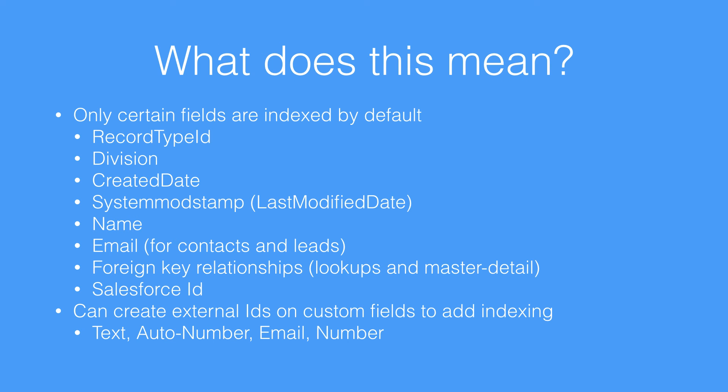So that's how Salesforce's indexing works. Because of how Salesforce puts these pieces together, only certain fields are indexed by default. These include record type ID, division, creator date, system mod stamp or last modified date, the name field, email on contacts and leads — which makes it quick to search for contacts and leads by email address — and any foreign key relationships such as lookups and master details, plus standard Salesforce IDs. If we want to index any other fields, we can only index text, auto numbers, emails, and number fields. The system will take a copy of those values, put them into the appropriate number value, text value, or string value column, and index them in the standard way.